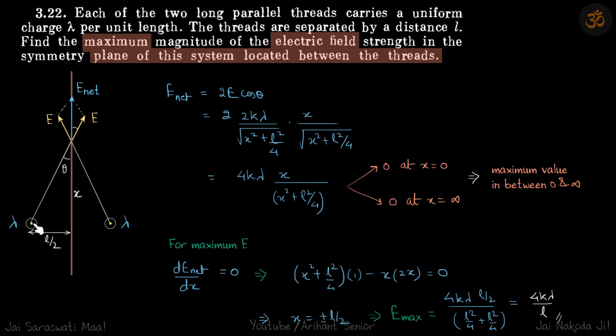Field due to one wire will be in this direction, due to this wire it will be in this direction, perpendicular to the wires. And due to both of them, the vector sum should be along this line.